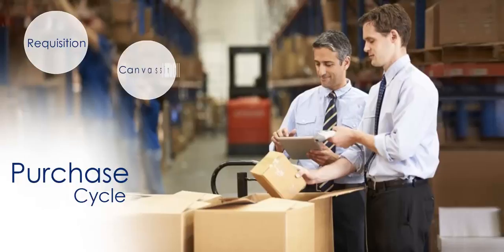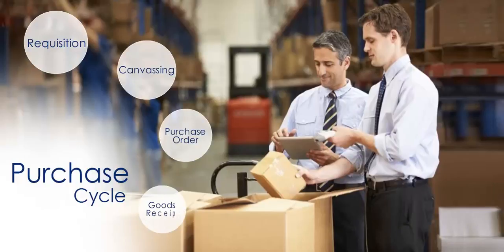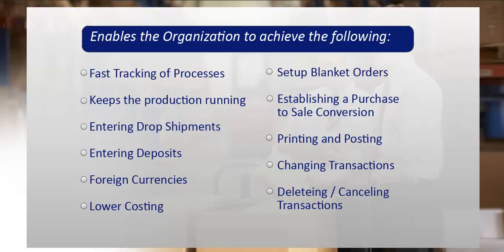The process starts with the requisition, which is followed by canvassing, purchase order, and lastly goods receipt. This system automates the process of generating purchase orders and goods receipt, covering two major purchasing tasks: the generating of purchase orders and the receipt of filled orders.